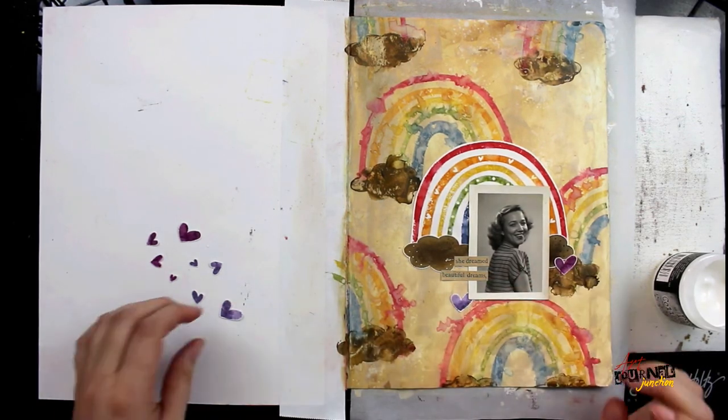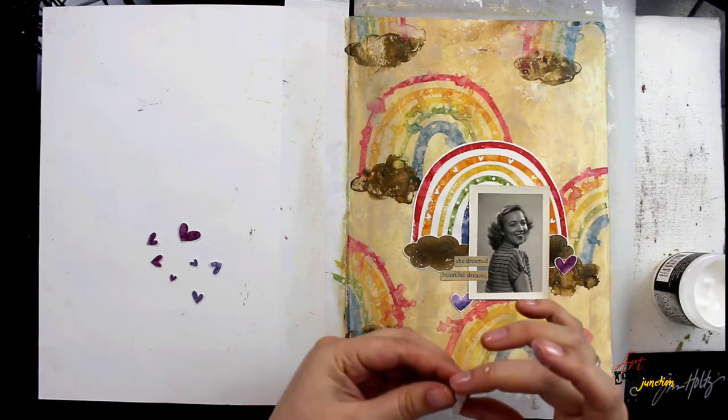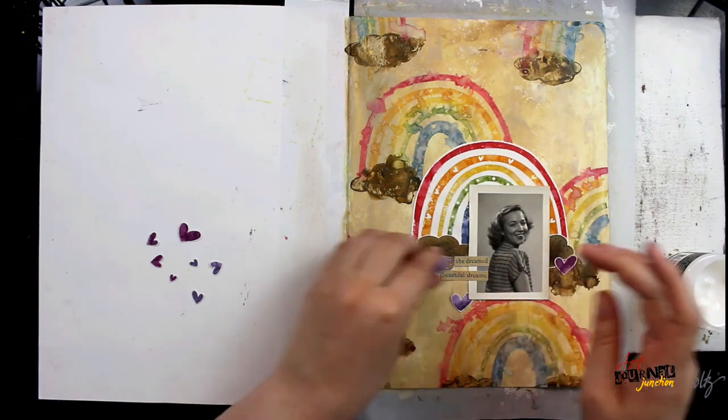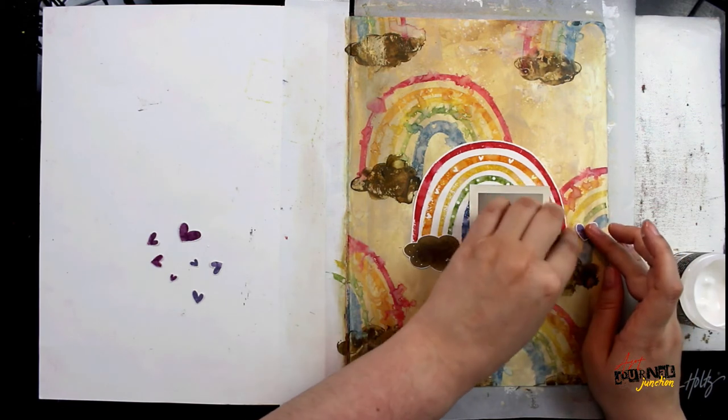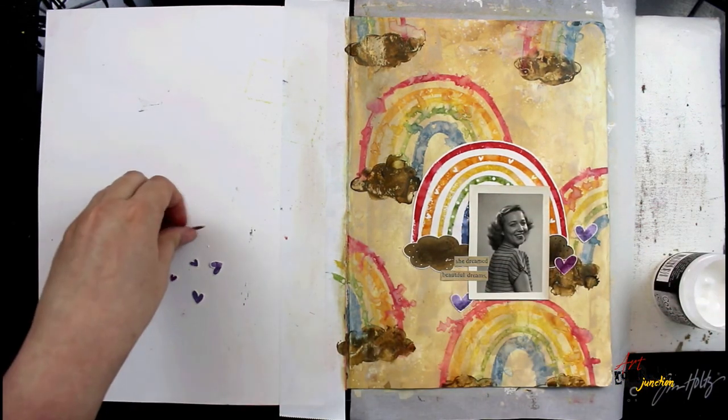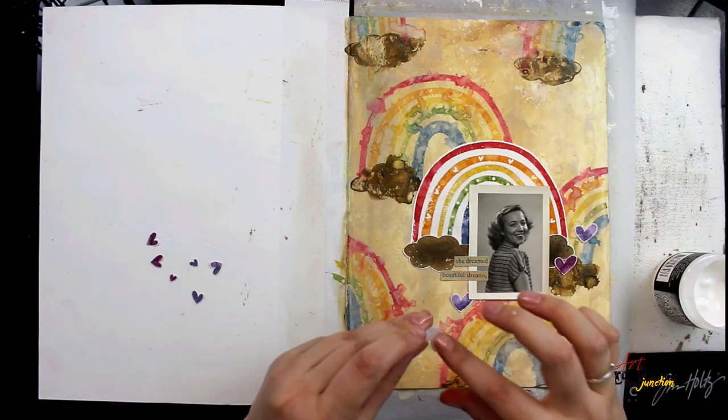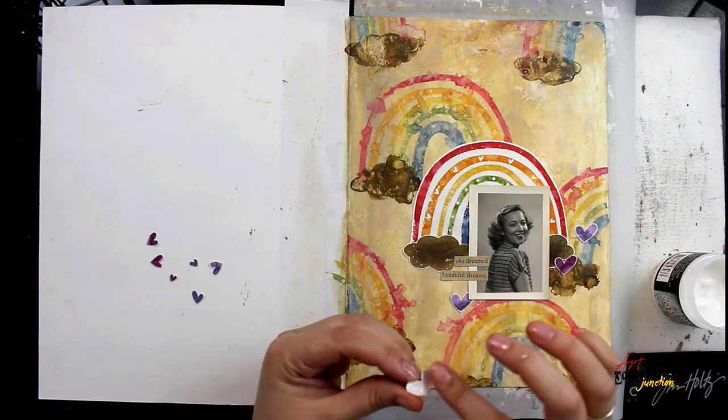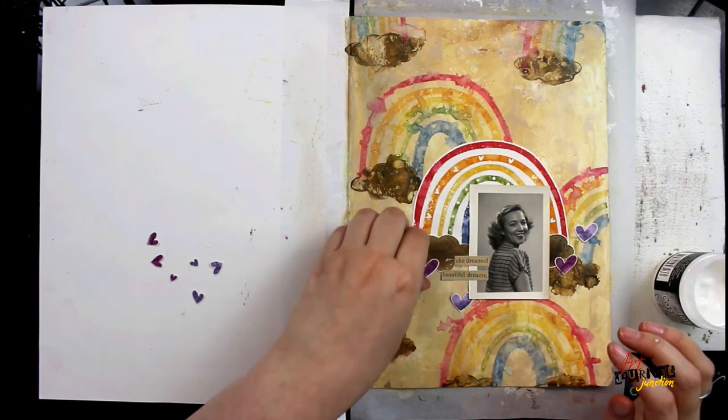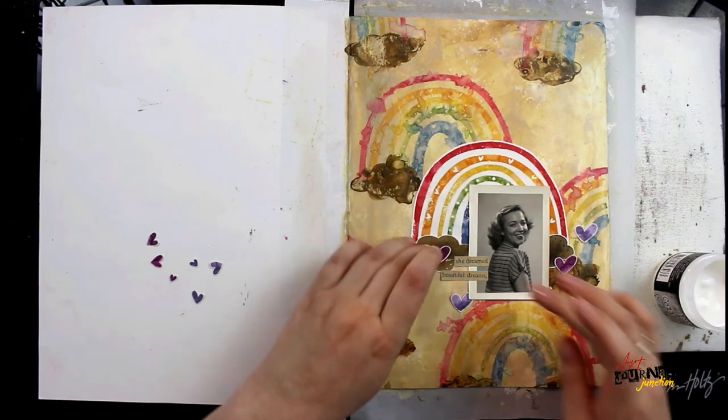You can see in the rainbow there actually isn't purple represented, so I'm bringing in the purple to finish out the rainbow color palette by including both indigo and violet hearts. I'm going to just glue them around the focal point of the photo until I'm happy with how many hearts I have placed.